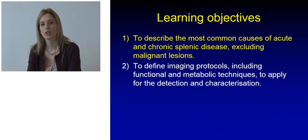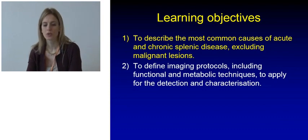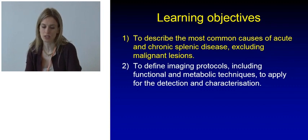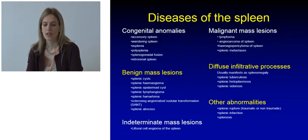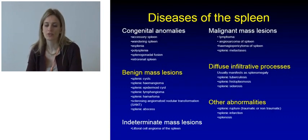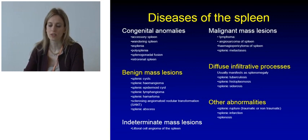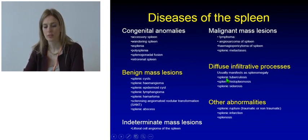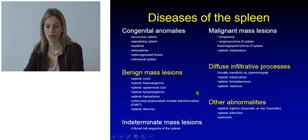Moving on to the first learning objective of this talk, we're going to describe the most common causes of acute and chronic diseases. The spleen can be affected by a variety of different diseases, but in the interest of time we're going to focus only on benign mass lesions, some diffuse infiltrative processes, and some other abnormalities.